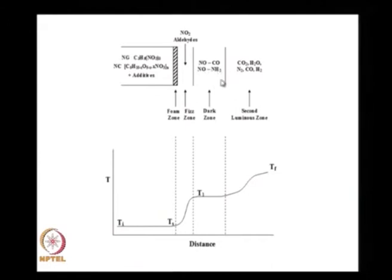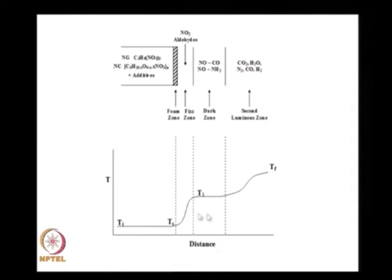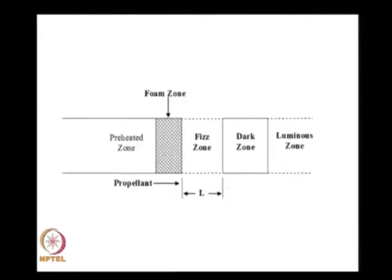In the dark zone, reactions between NO and NH₂O, NO and CO do not generate much heat. But thereafter, reactions generate heat and you get CO₂, CO, H₂O, and the temperature goes to the final value. This dark zone exists only for pressures less than around 10 MPa or 100 atmospheres; at higher values, temperature goes directly to Tf. We identified a preheated zone, foam zone, fizz zone, dark zone, and luminous zone.